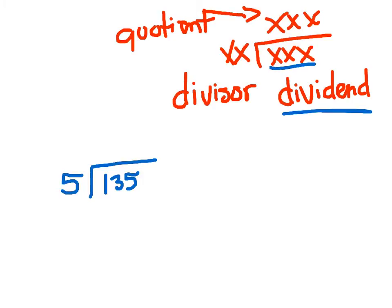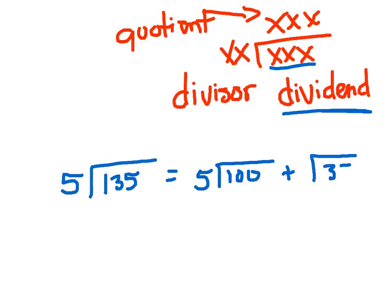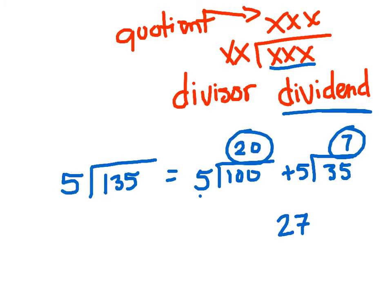Now you could go through this division problem and solve it fine, but what if you did this? 135 divided by 5 would be the same as saying 100 divided by 5, then add 35 divided by 5, and that will get you your answer. So solving this: 5 goes into 100 twenty times, then 5 goes into 35 seven times. You would just take 20 plus 7 and get a final answer of 27.